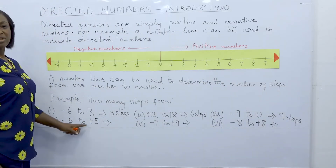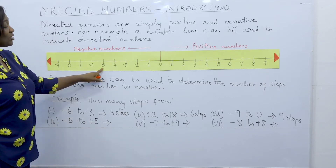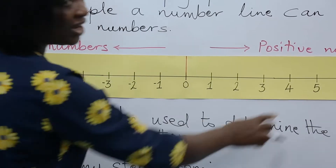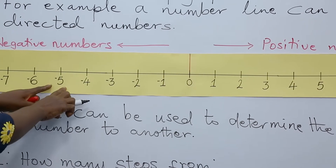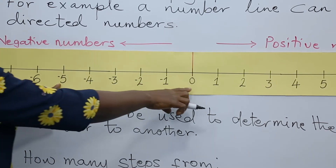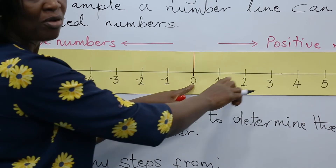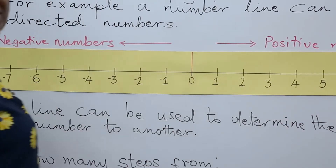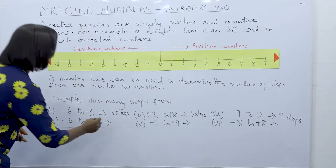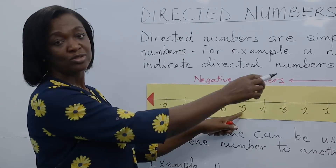From minus five to plus five — how many steps are there? Minus five is on the negative side and plus five is on the positive side, so we are going from negative to positive. From minus five to zero there are five steps, and from zero to five there are another five steps. So there are ten steps from minus five to plus five.